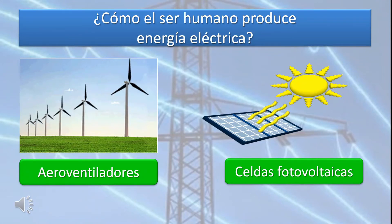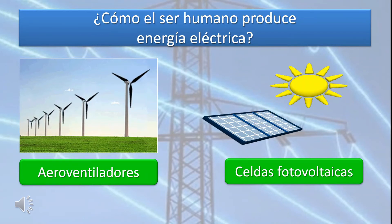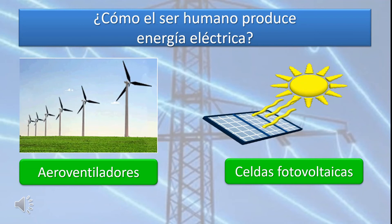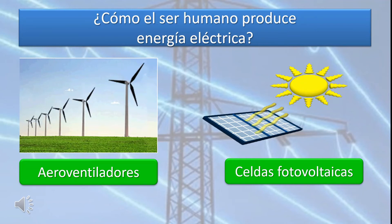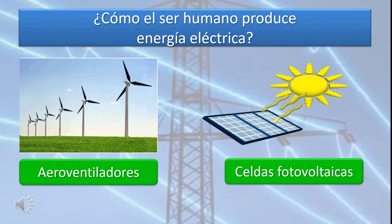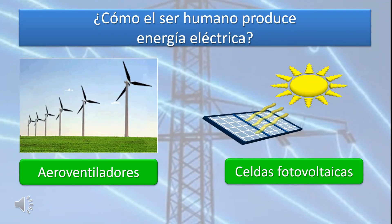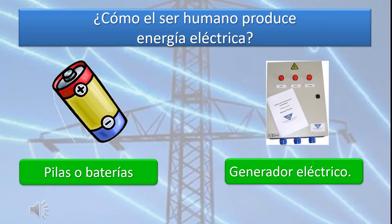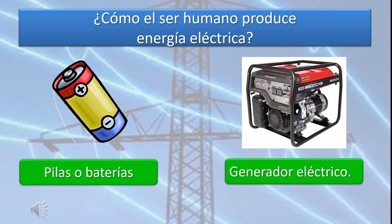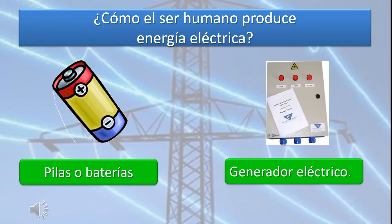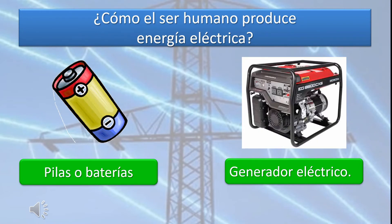En primer lugar, podemos utilizar la energía del viento, ya que ésta se puede transformar en energía eléctrica mediante molinos o aerogeneradores. En segundo lugar, tenemos las celdas fotovoltaicas; además, se puede producir energía eléctrica a partir de la radiación solar. También se puede producir energía eléctrica a partir de los procesos químicos que ocurren al interior de pilas o baterías eléctricas. Y finalmente, al utilizar la energía química presente en combustibles como el petróleo o el gas natural, podemos producir energía eléctrica utilizando un generador eléctrico.